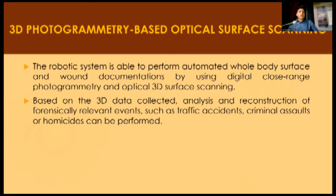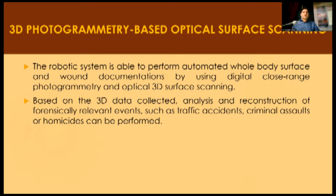3D photogrammetry-based optical surface scanning is a robotic system able to perform automated whole-body surface and wound documentation using digital close-range photogrammetry and optical 3D surface scanning. Based on the 3D data collected, analysis and reconstruction of forensically relevant events such as traffic accidents, criminal assaults or homicides can be performed.